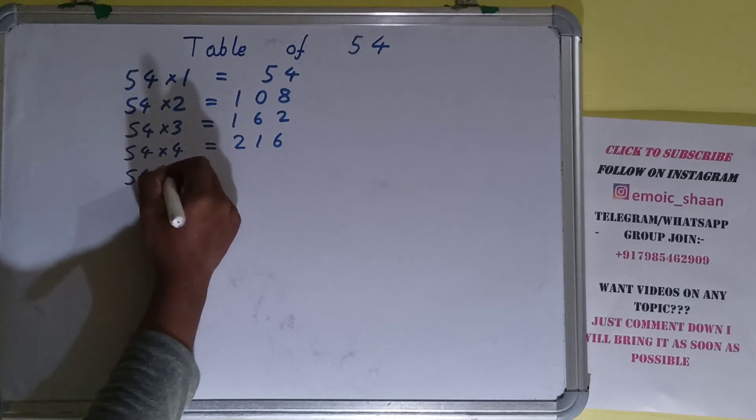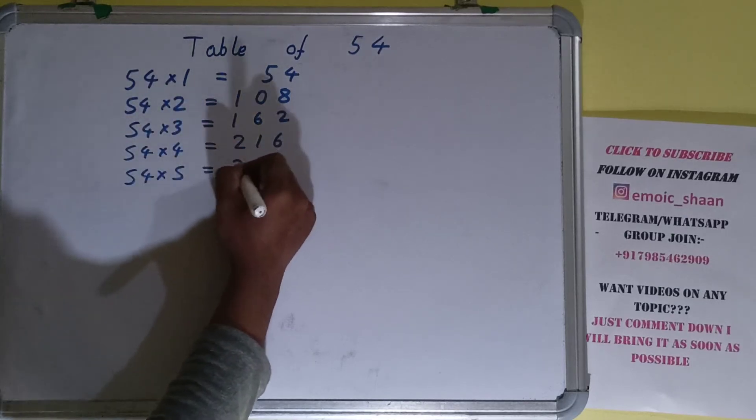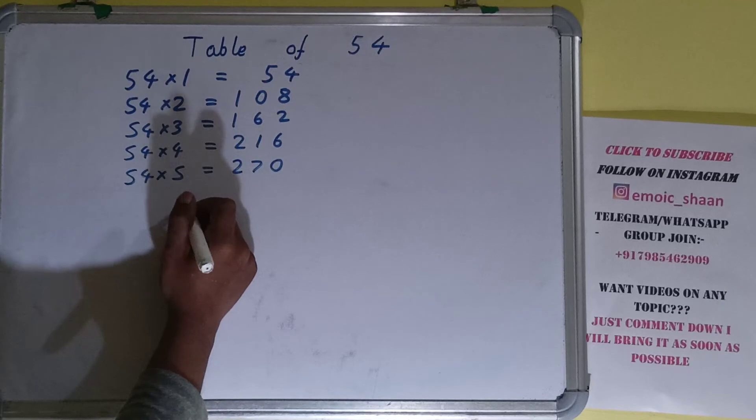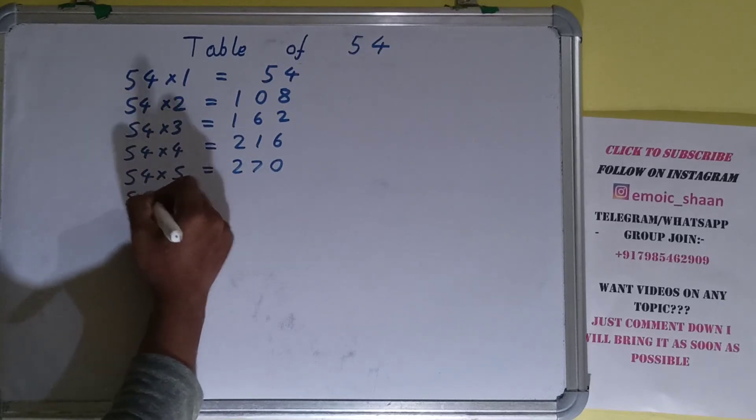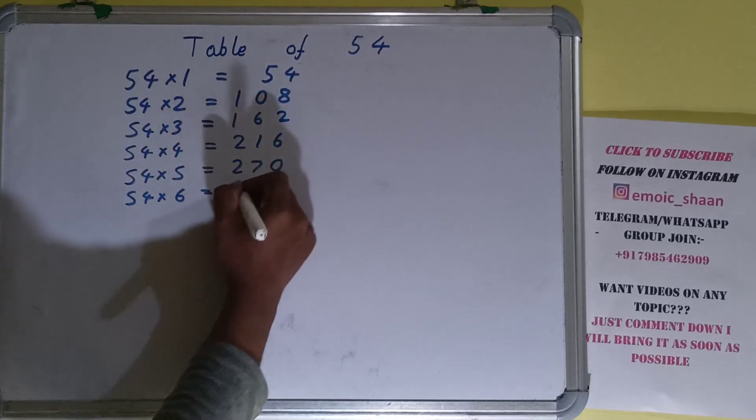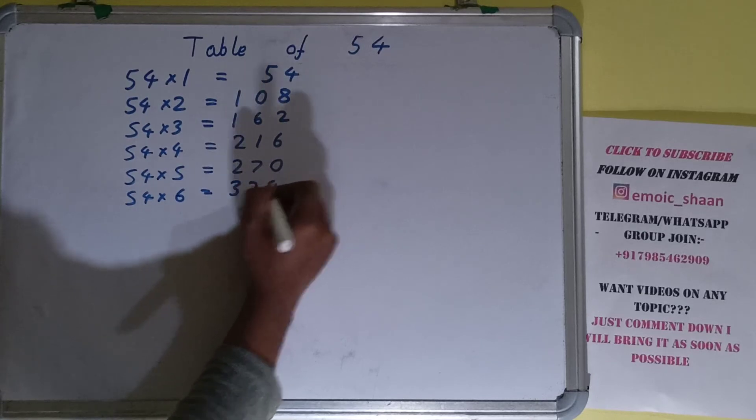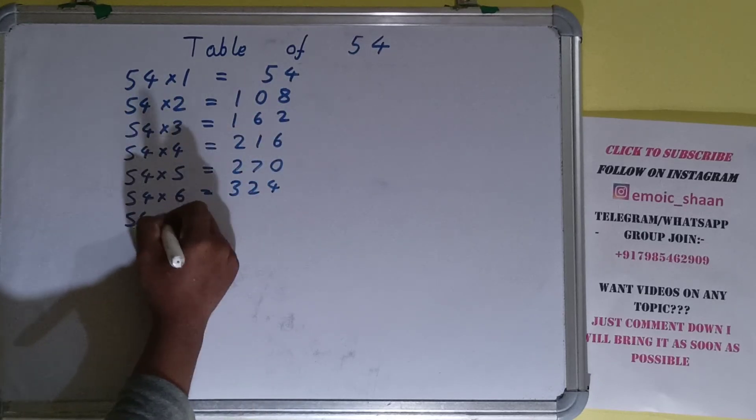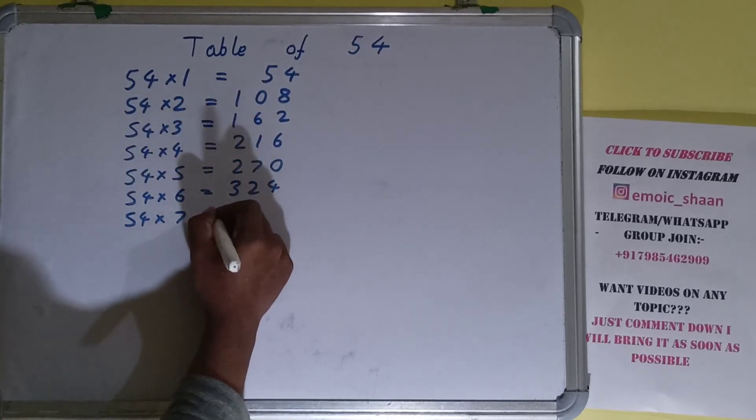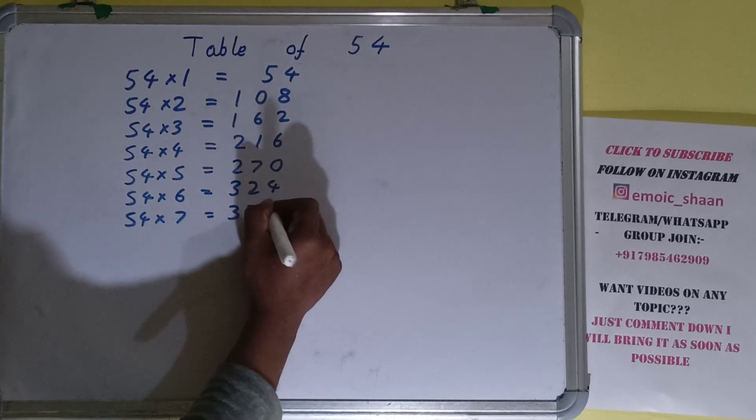54 into 5 is 270. 54 into 6 is 324. 54 into 7 is 378.